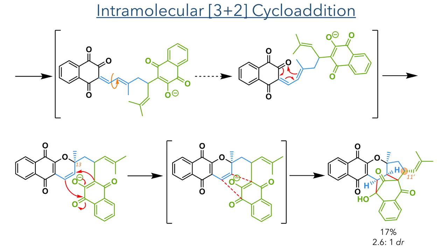With the dehydropyrane ring now formed, it could then undergo an intramolecular 3+2 cycloaddition. This occurs from the face anti to the methyl group, as the stereochemistry of the C13 position directs it to the opposite face of the molecule. As the Michael addition is unselective, both of the 11-prime isomers are formed, leading to a 2.6 to 1 diastereomeric ratio of the final product.